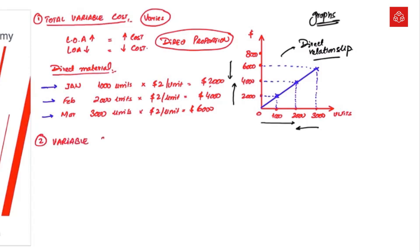Number two: variable cost per unit. Remember that variable cost per unit reacts differently compared to total variable cost. Total variable cost increases when the total level of activity increases, in direct proportion. But variable cost per unit — or the cost of one unit — will always remain constant. For example, in January we produce 1,000 units at two dollars per unit; in February at 2,000 units the cost per unit still remains two dollars, but total variable cost increases to $4,000. Even in March the variable cost per unit remains constant.